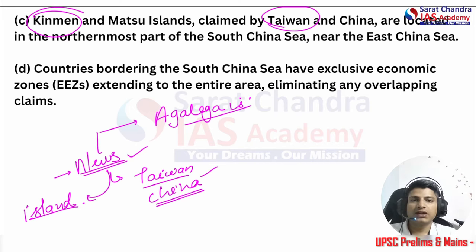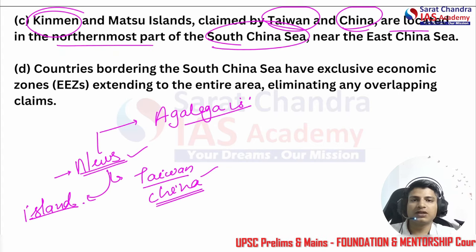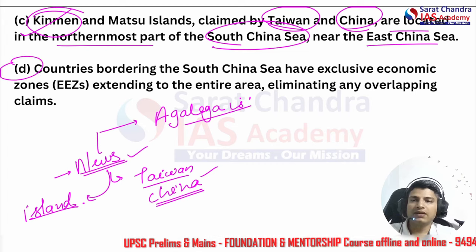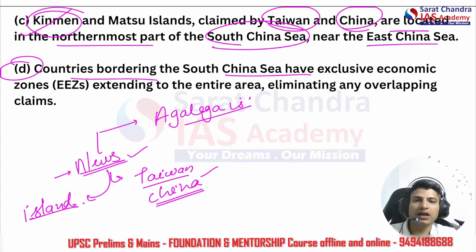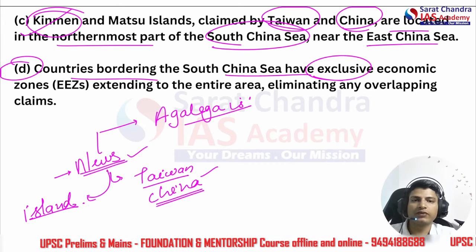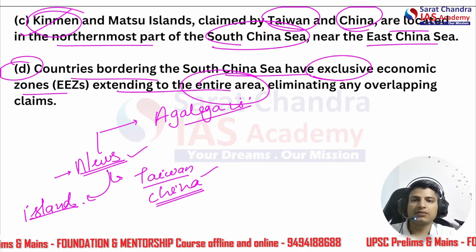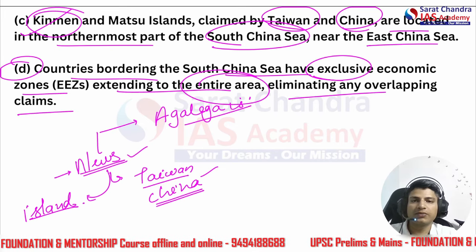Statement three: Kinmen and Matsu are claimed by Taiwan and China — ROC and China — and are located in the northernmost part of the South China Sea near the East China Sea. Statement four: countries bordering the South China Sea have exclusive economic zones extending to the entire area, eliminating any overlapping claims. This fourth statement is completely incorrect.